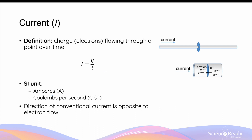In physics, the direction of what we call conventional current is always defined as opposite to the direction of electron flow. So if the current through a wire is moving to the right as shown, then the direction of electron flow that gives rise to this current actually flows in the opposite direction, to the left.